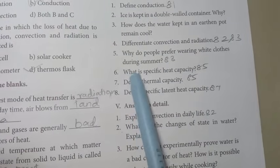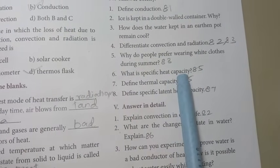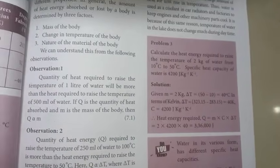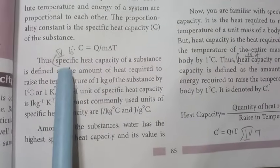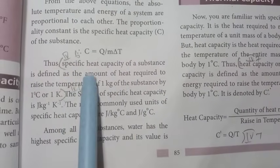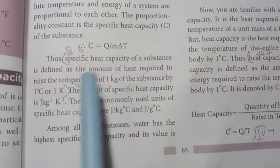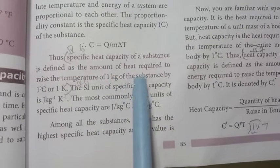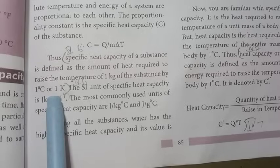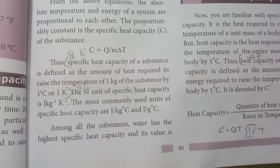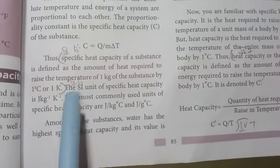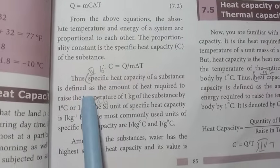Then question number 6: What is specific heat capacity? Page number 85. Specific heat capacity of a substance is defined as the amount of heat required to raise the temperature of 1 kg of the substance by 1 degree Celsius or 1 Kelvin. Roman number 4, sixth one answer. You can add SI unit or close.